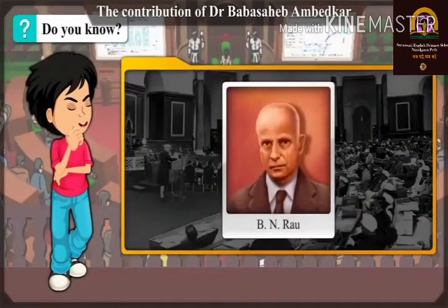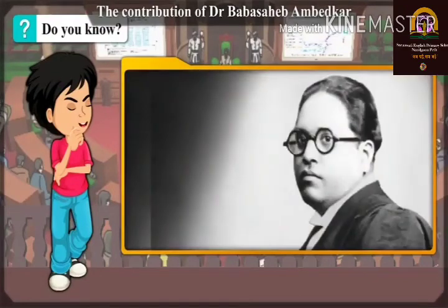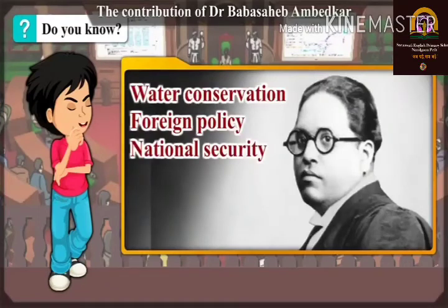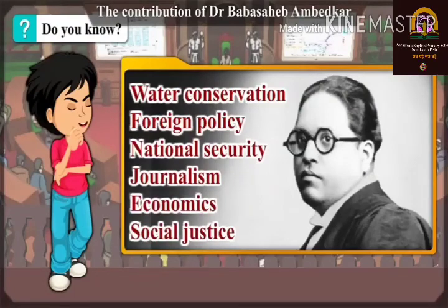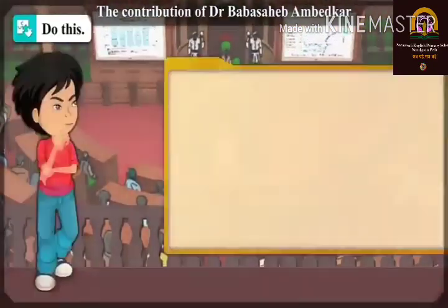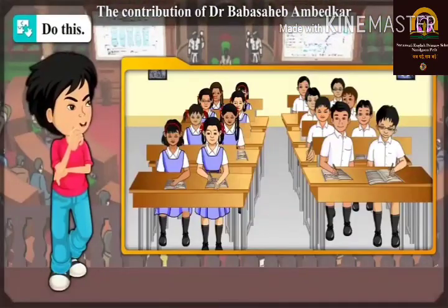संविधान सभेत चर्चा, विचारविनिमयाच्या आधारे निर्णय घेतले जात. विरोधी मतांच्या लोकांच्या सूचनांचाही आदर केला गेला. त्यामुळेच आपले संविधान पूर्ण होण्यासाठी दोन वर्षे, अकरा महिने लागले. 26 जानेवारी 1950 रोजी देशाचा राज्यकारभार सुरू झाला आणि त्या दिवसापासून भारत पूर्णपणे प्रजासत्ताक राज्य बनले. हे आपण नीट समजून घेतले आहे.